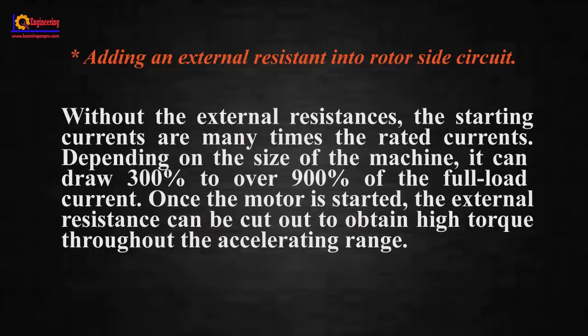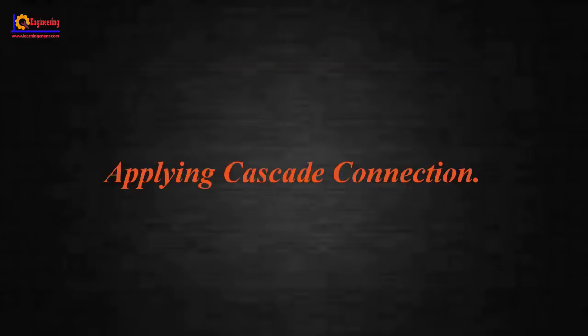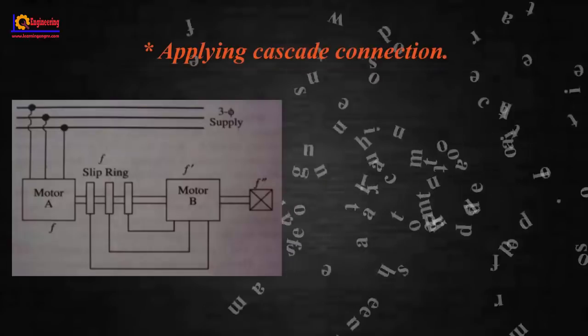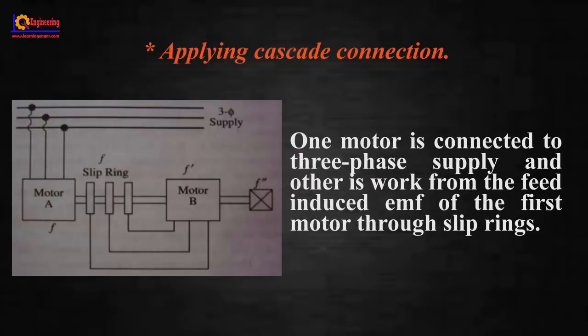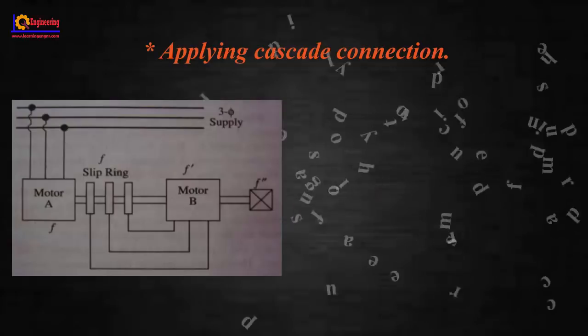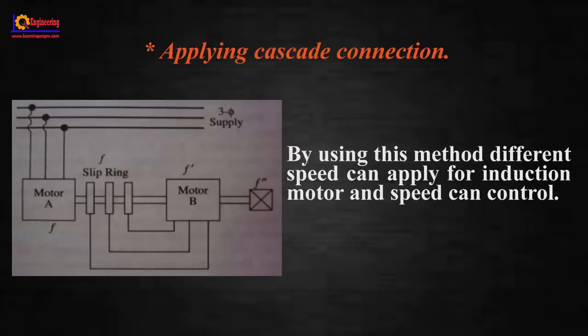Applying cascade connection: in this cascade operation method, two motors are mounted on the same shaft and run at same speed. One motor is connected to three-phase supply and the other is fed from the induced EMF of the first motor through slip rings. By using this method, different speeds can be applied for induction motor and speed can be controlled.